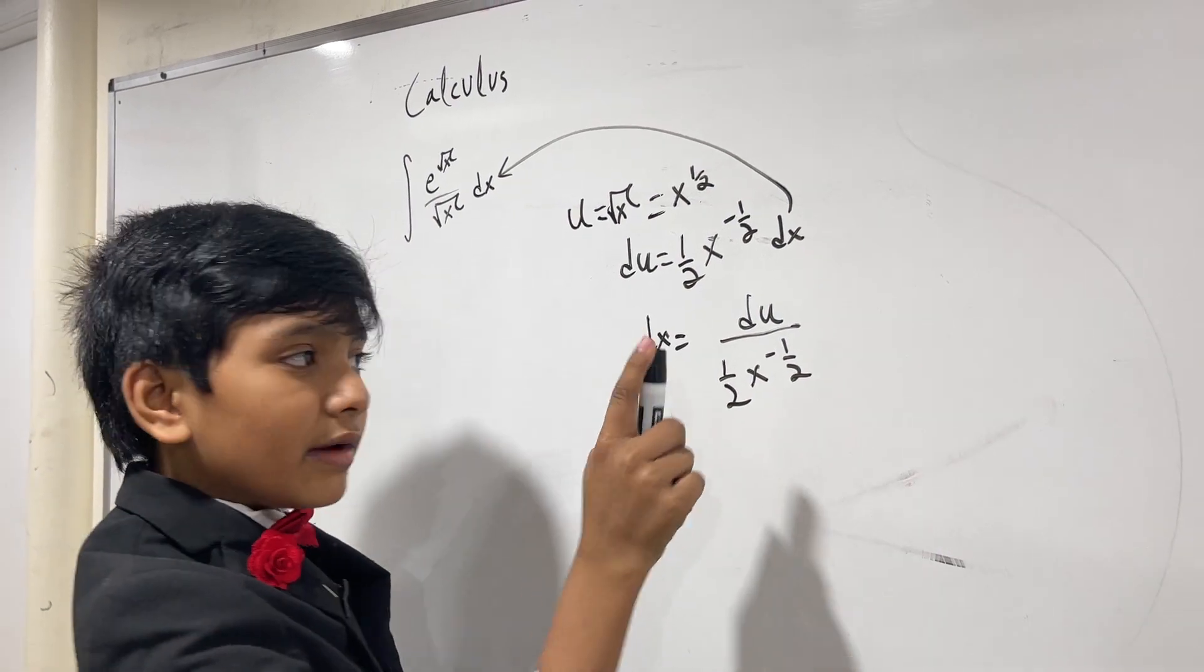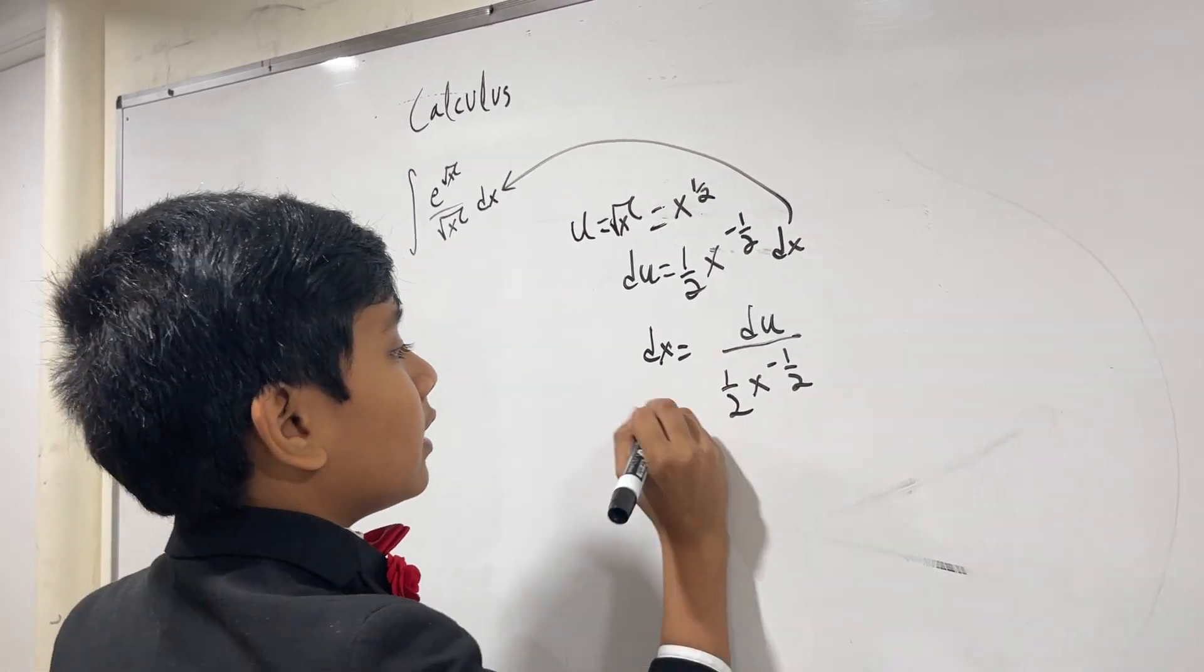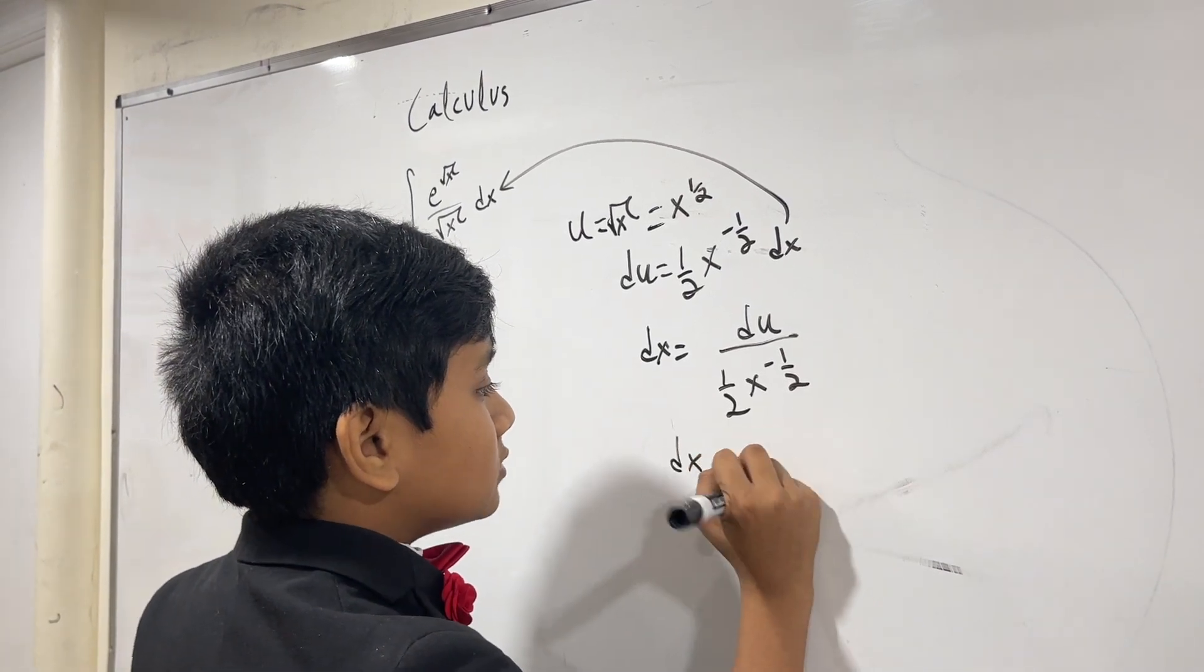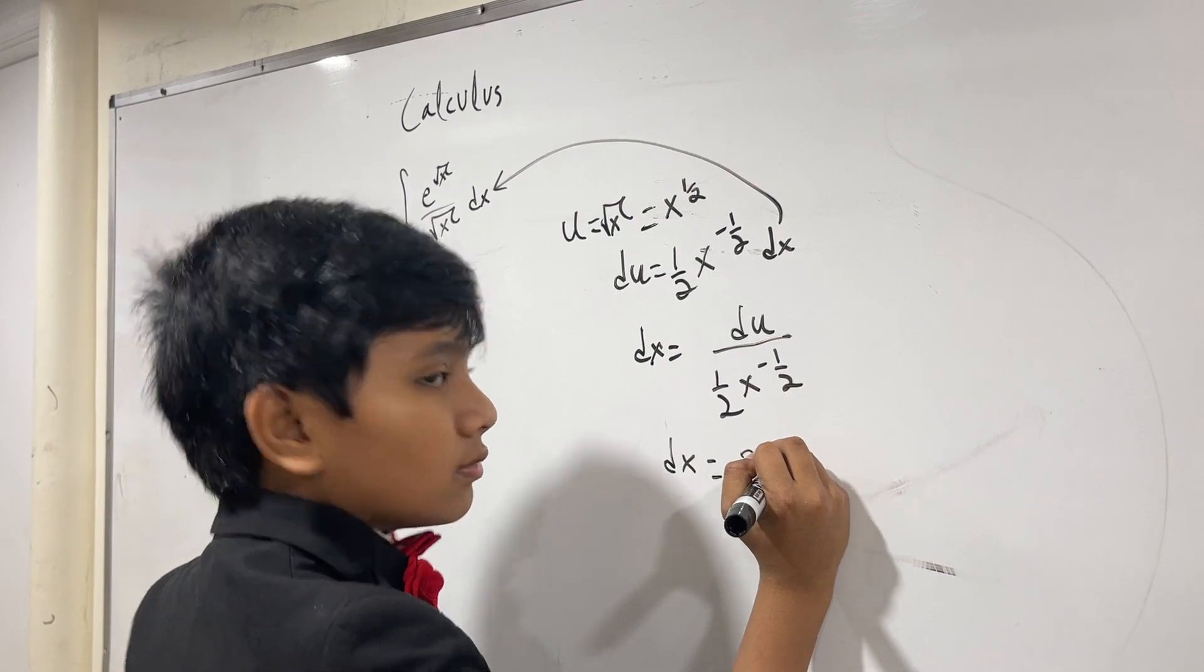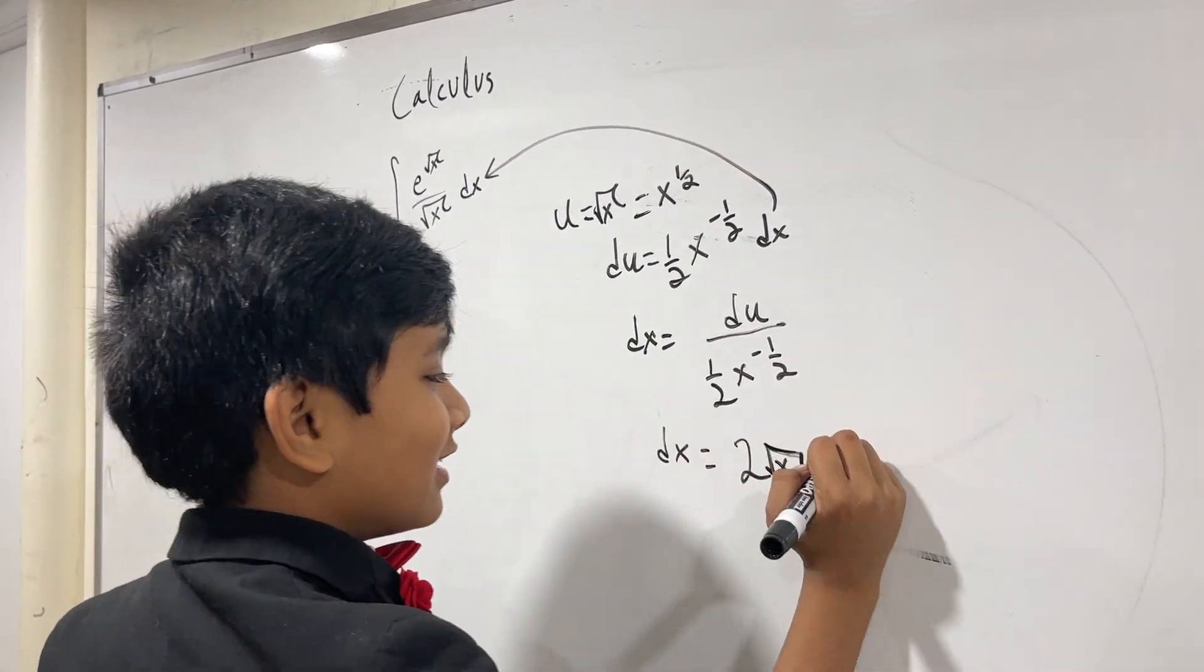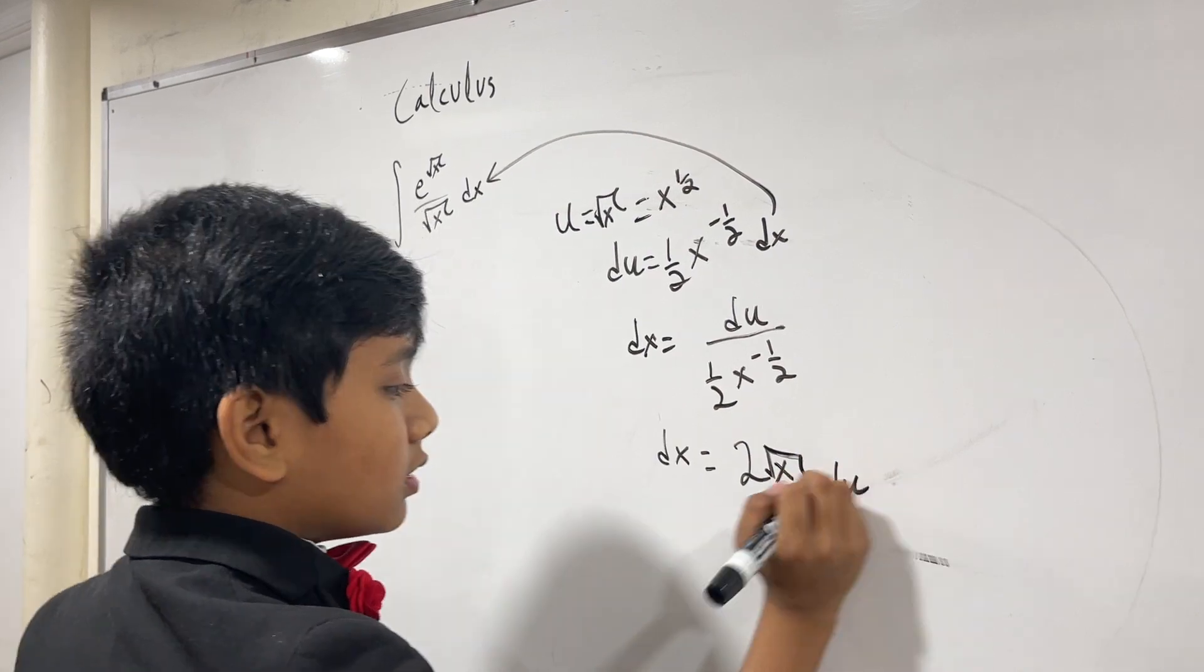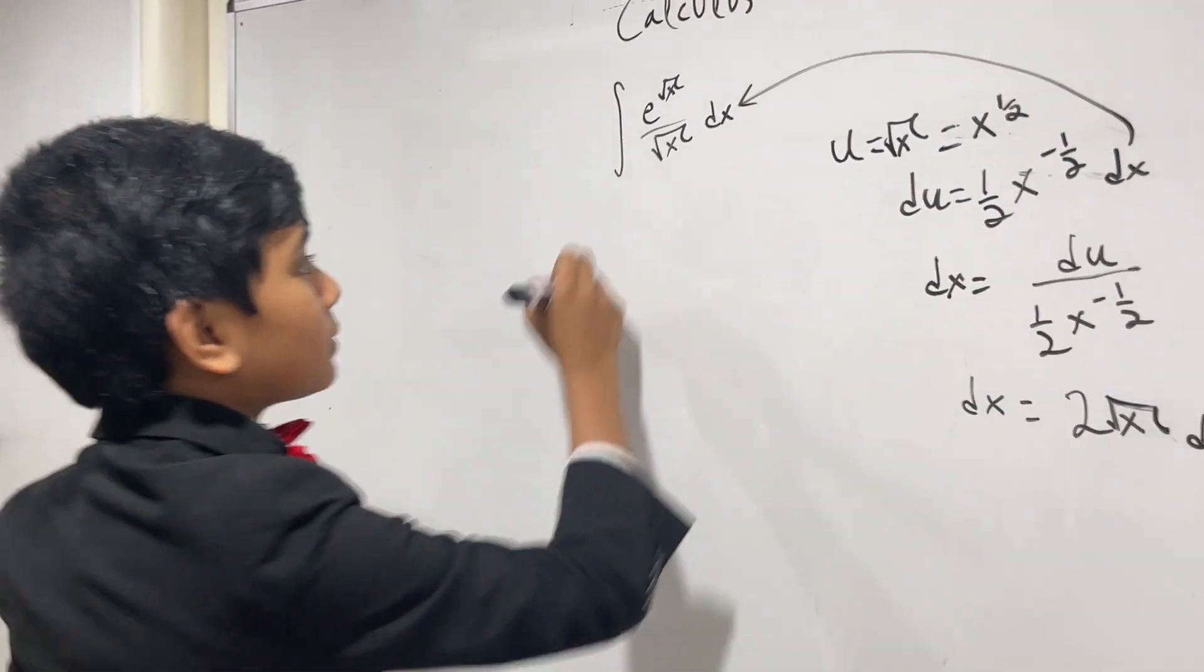when you have a negative exponent on the bottom, then you can bring it up and change it to a positive exponent. So, this is 2x to the one half, or rather, root x du. Okay. So, now let's plug that in.